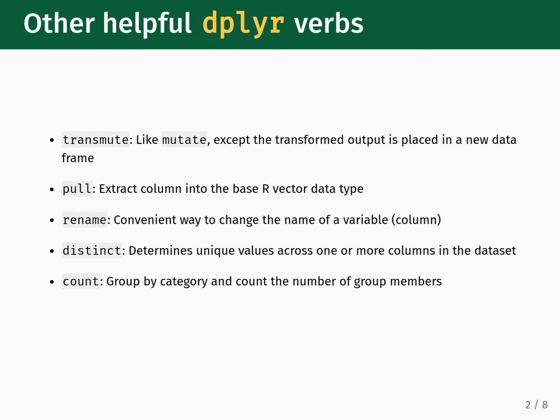The first function we'll consider is transmute. The transmute function behaves nearly the same as mutate, except that instead of adding a new column onto the existing dataframe, you instead place the created column into its own separate dataframe. The next function is pull. The pull function is handy when you need to extract a column and convert it into the base R vector data type.